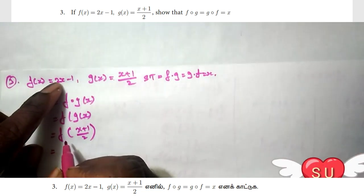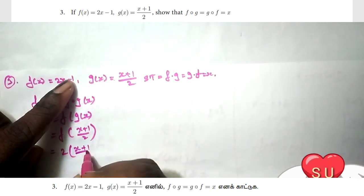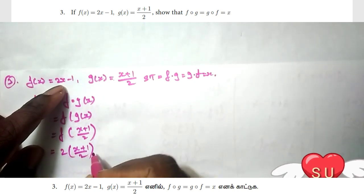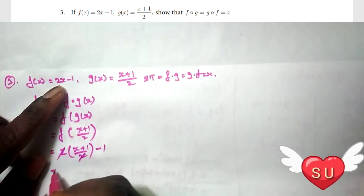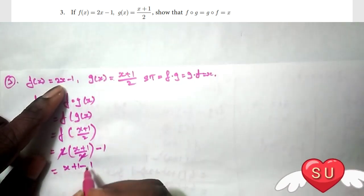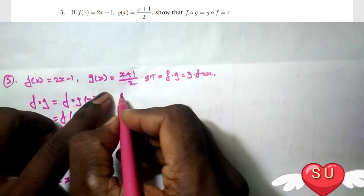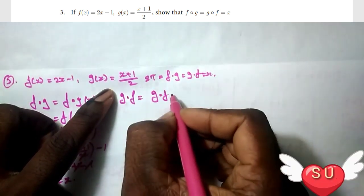f(x) is 2x - 1, so f of (x + 1)/2 equals 2((x + 1)/2) - 1. The 2s cancel, giving (x + 1) - 1, and this simplifies to x.